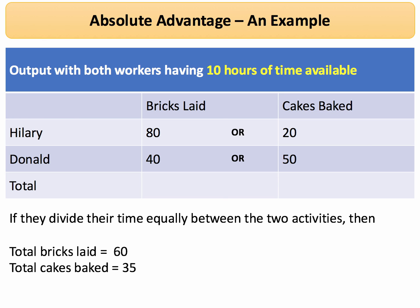It should be clear that in this situation Hillary has an absolute advantage in bricks — she's a better bricklayer than Donald. And Donald, God bless him, has an absolute advantage in baking cakes — he's just a better baker than Hillary.